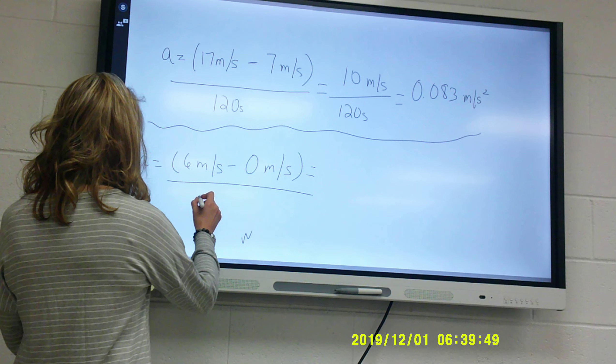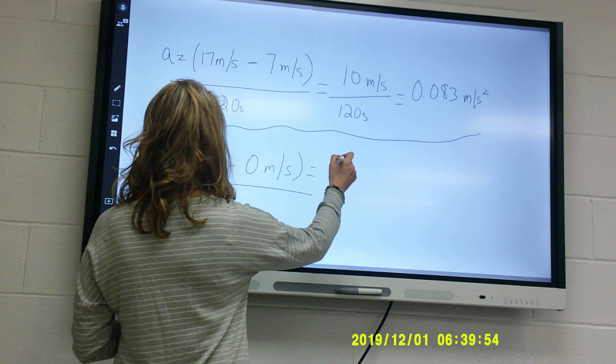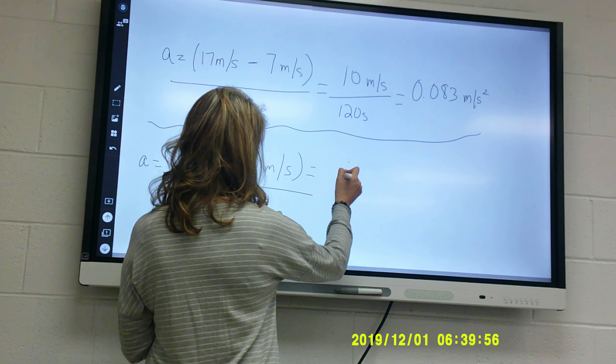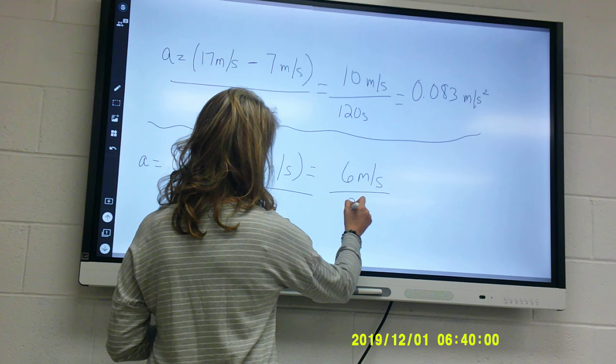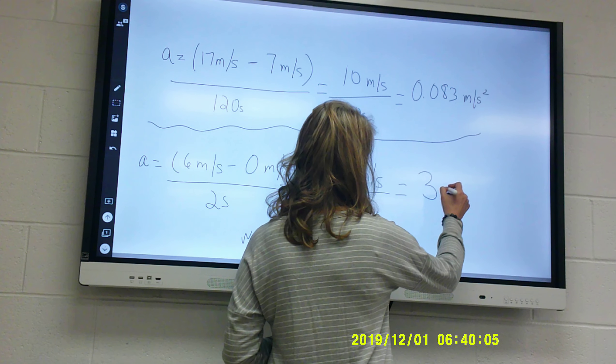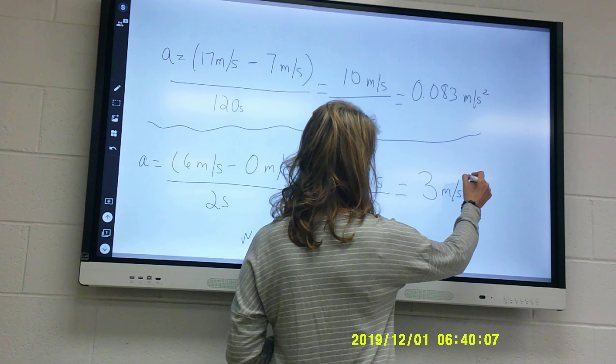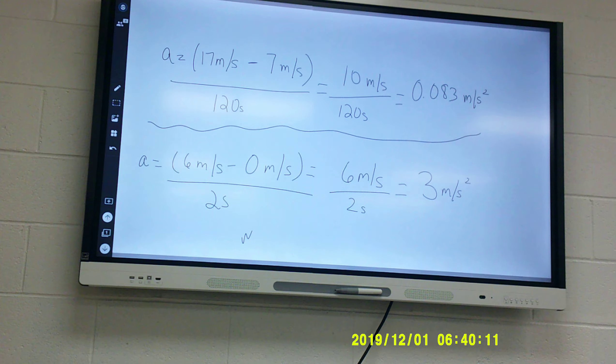So what's 6 minus zero? 6. Oh, sorry. What's my time here? That should have been... Yes, 2 seconds. Sorry. And then, so we've got 6 meters per second divided by 2 seconds. So what's my answer going to be? 3 meters per second. What? Squared. Squared.